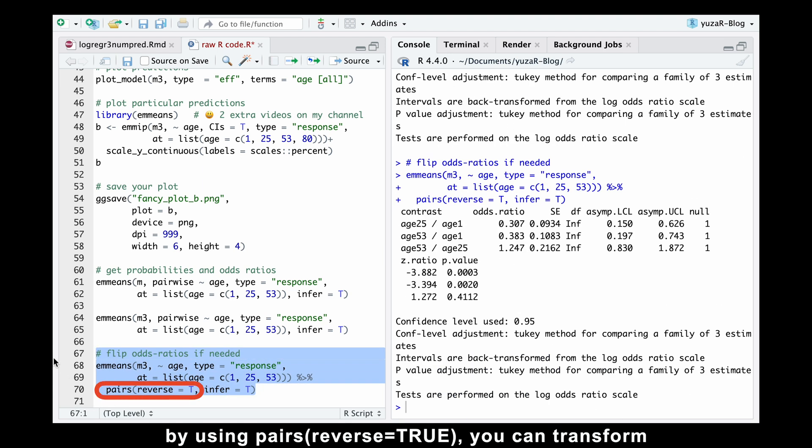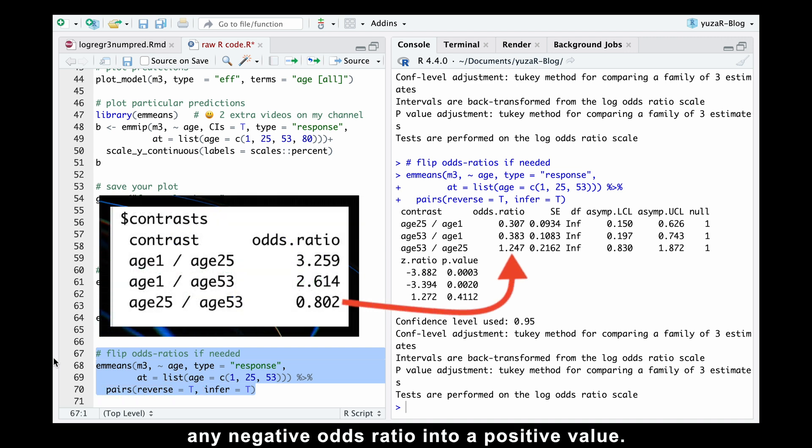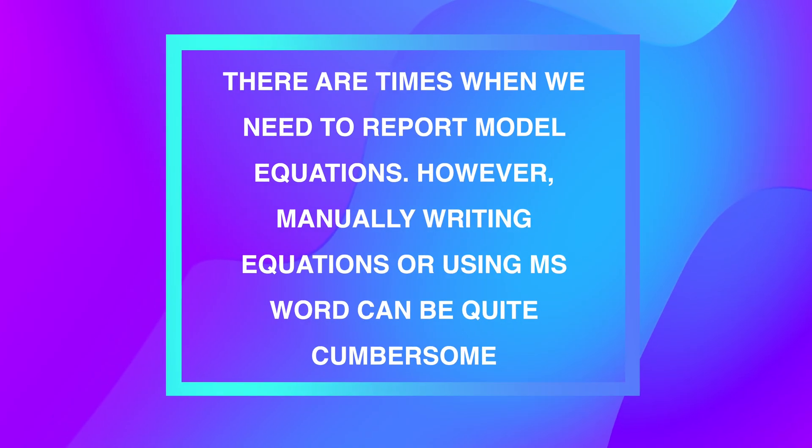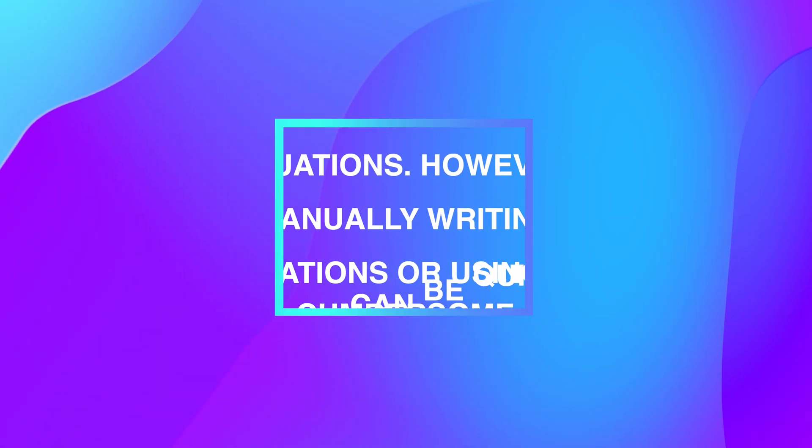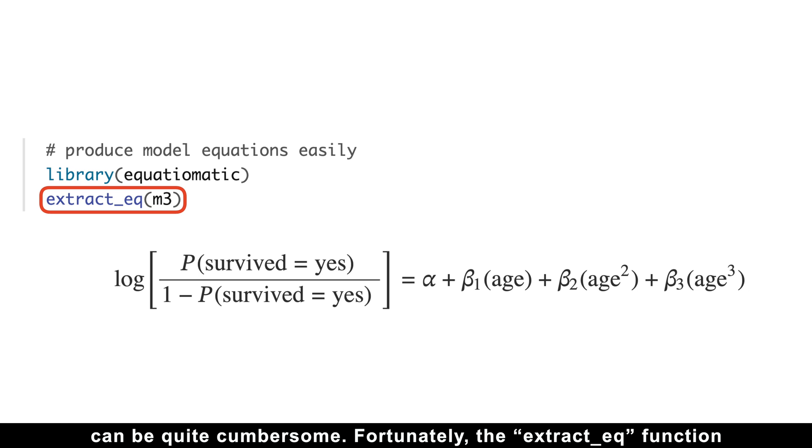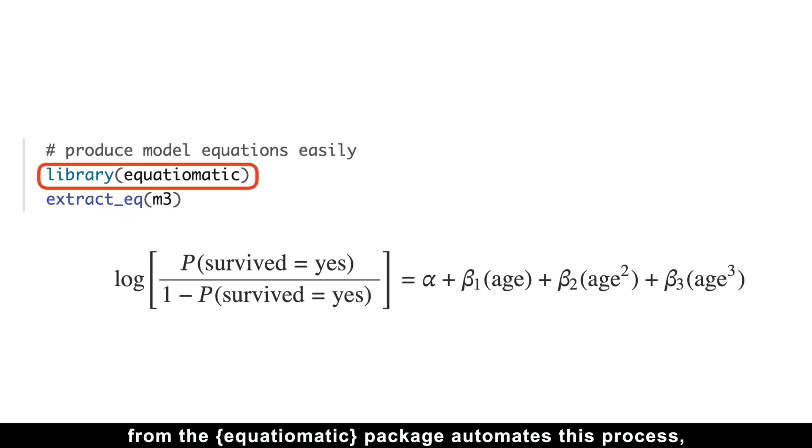Here is just a quick and useful code example for flipping odds ratios. By using pairs reverse true, you can transform any negative odds ratio into a positive value. Now, there are times when we need to report model equations. However, manually writing equations or using Microsoft Word can be quite cumbersome. Fortunately, the extract_equation function from the equatiomatic package automates this process, making it incredibly useful for publication.